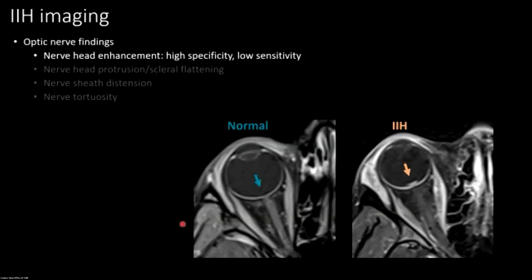Let's go through these findings individually. The optic nerve head should be flat at the back of the globe and shouldn't enhance like a little lump on the back surface of the globe. When we see that protrusion with enhancement, it's pretty specific — almost a papilledema equivalent on imaging.